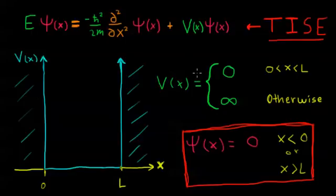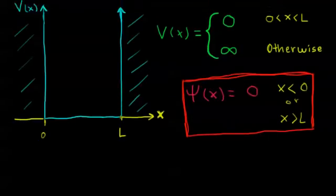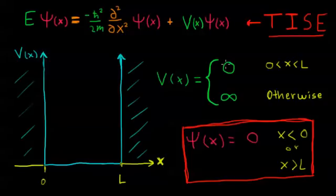Now let's move on to the other case where the particle is inside the well. Inside the well, we say that the potential energy of the particle, this V(x) term, equals zero. This equals zero multiplied by the wave function, whatever it might be, which is zero. So this term in the equation goes away.